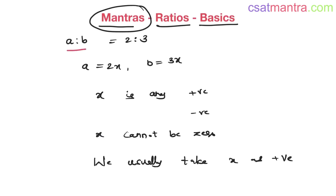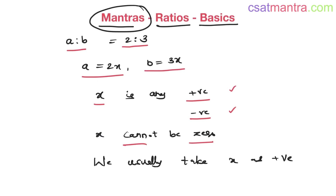If a is to b is 2 is to 3, we can write a as 2x and b as 3x. Here x is any positive or negative number — it can be positive, it can be negative, but it cannot be 0, because if it is 0 everything would be 0, and 0 by 0 is not defined — absurd.